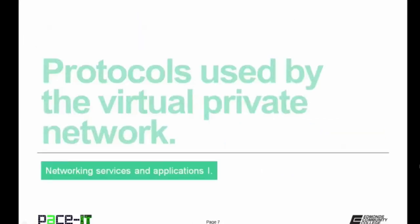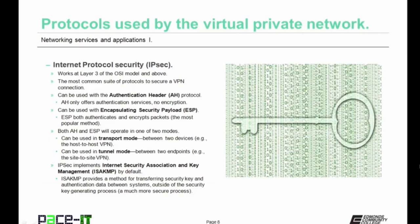It's time to discuss some protocols used by the virtual private network. The big protocol for VPNs is called Internet Protocol Security — IPsec — which isn't actually a single protocol, but a whole set of protocols. IPsec works at Layer 3 of the OSI model or above, and is the most common suite of protocols used to secure a VPN connection. IPsec can be used with the Authentication Header Protocol, or AH protocol. AH only offers authentication services but no encryption — it authenticates the user, but there is no encryption of the session.